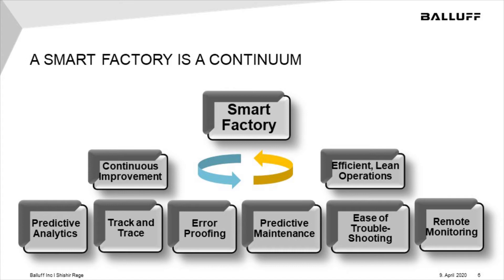The smart factory can continue to create competitive advantage through two interdependent facets: continuous improvement and efficient lean philosophy. Efficient and lean operations focus on day-to-day activities that eliminate waste and reduce non-value-added activities, while continuous improvement looks at the existing state and figures out ways to improve it. These objectives include predictive analytics, track and trace, error proofing, visibility, predictive maintenance, faster troubleshooting, and remote monitoring — all feeding each other.